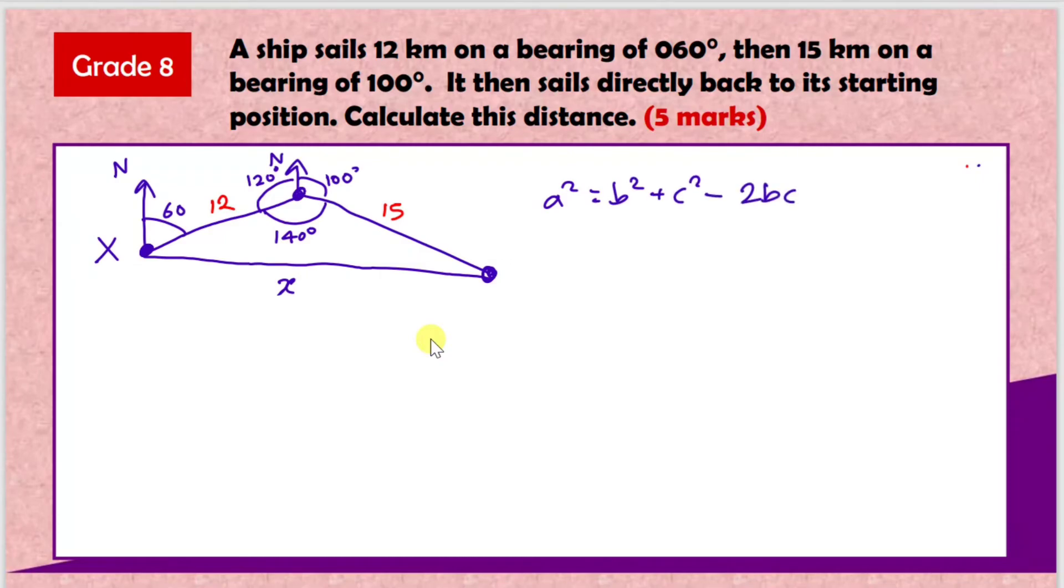So we've got 140 and its matching pair x, that means the b and c are the red ones, 12 and 15. So we therefore have x² equals 12² plus 15² minus 2 times 12 times 15 cos 140. Putting all of this into a calculator and then square rooting your answer, because remember you just want x, you should therefore get a distance of 25.4 kilometers. So that's it, that's the end of these questions.